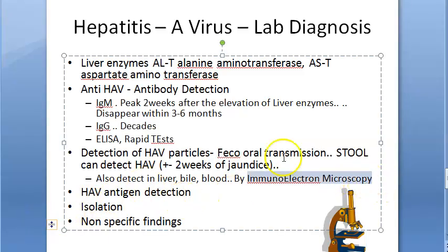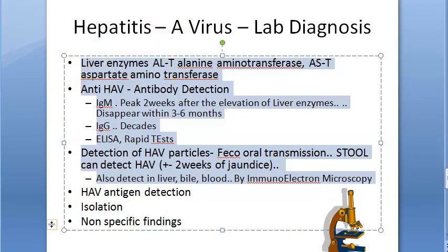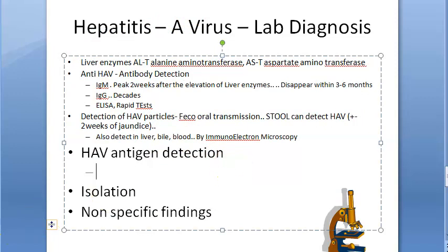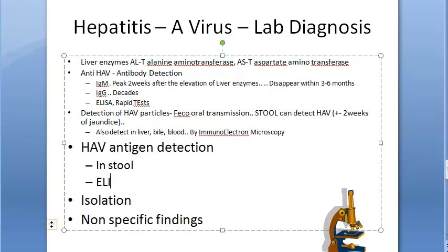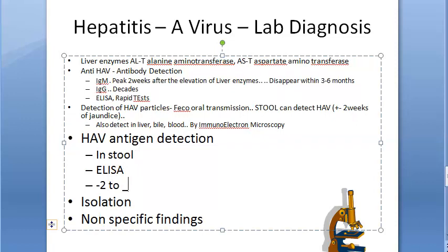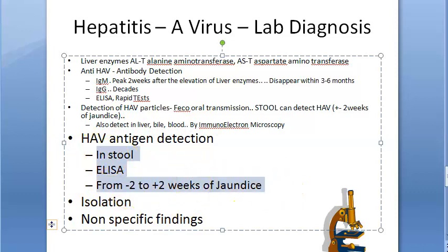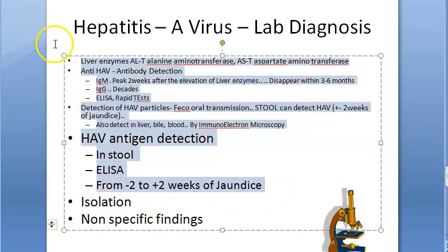For HAV antigen detection, an ELISA format is available to detect HAV antigen from stool samples. This can be done from minus two to plus two weeks of jaundice — the same detection window as for HAV particles.